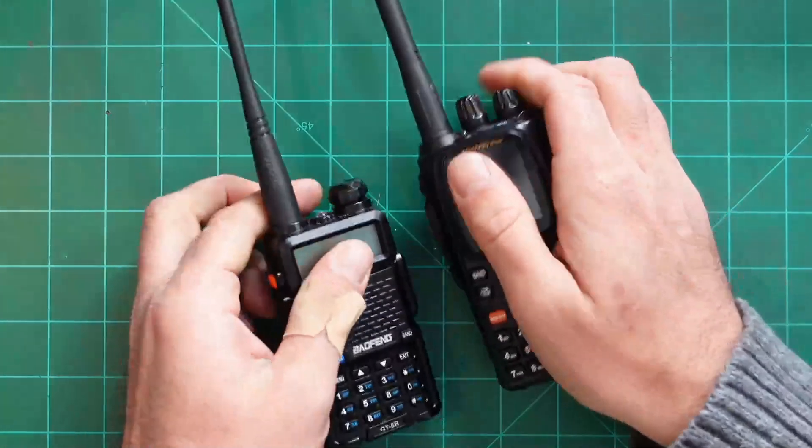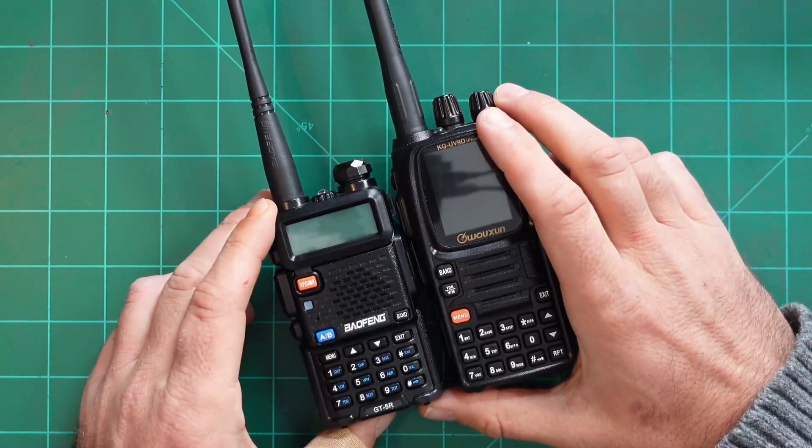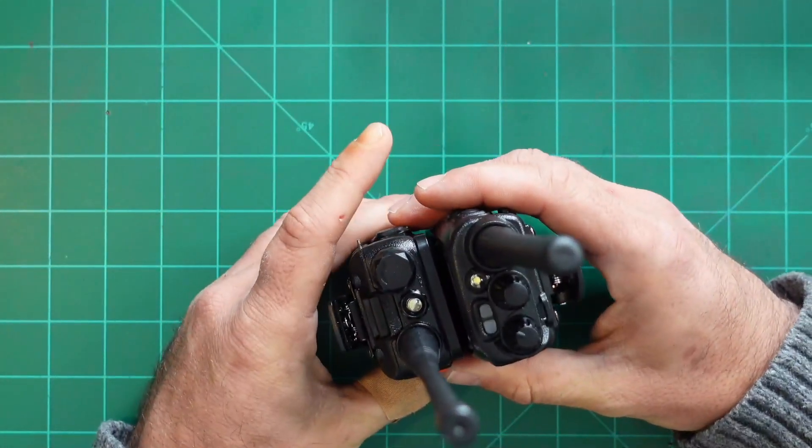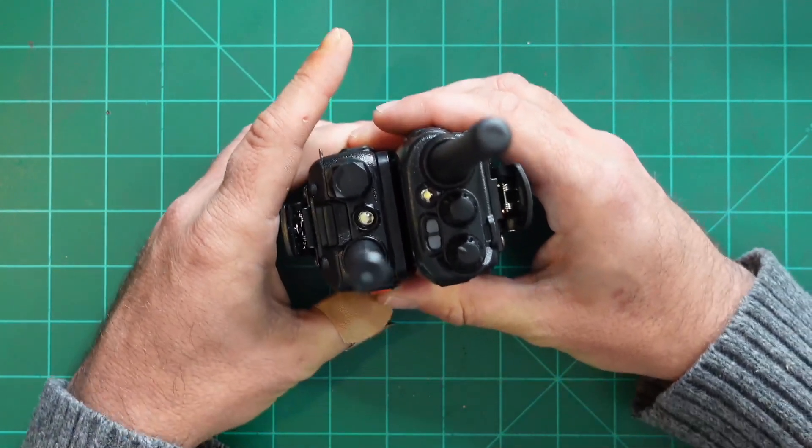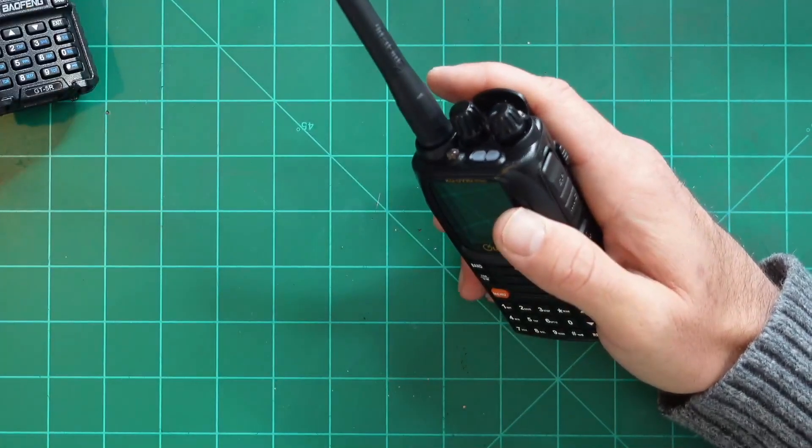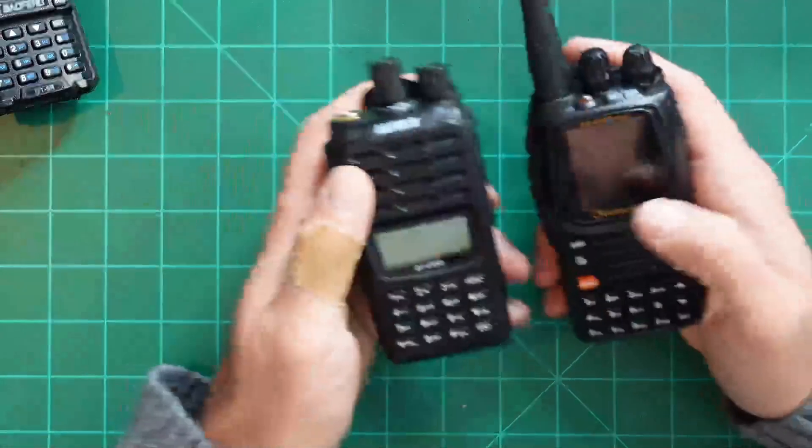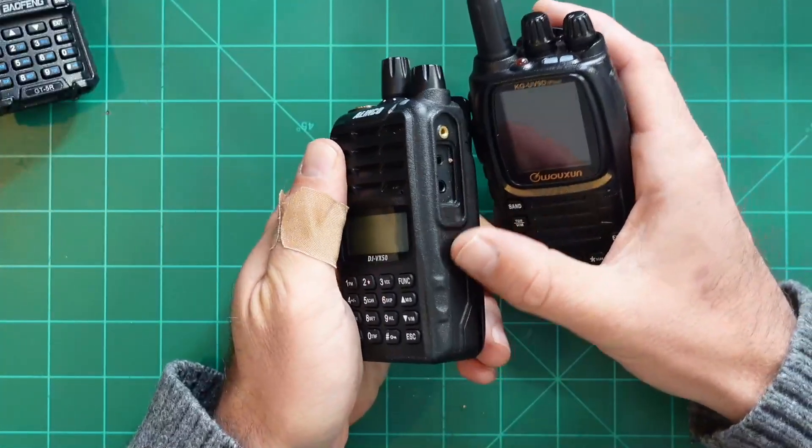If I were to compare it to something like a Baofeng UV5R, it's a lot taller than a Baofeng UV5R. Now for the width, it's just about the same width as well. But what I will say also is the plastics on this radio are pretty comparable to something like the Alinco DJ VX50.